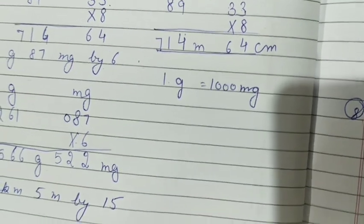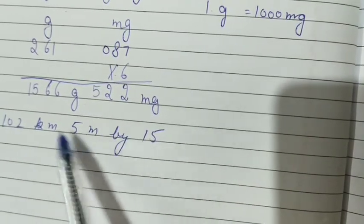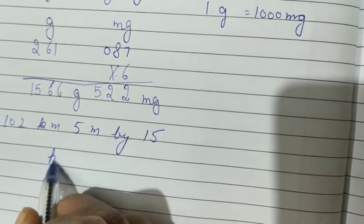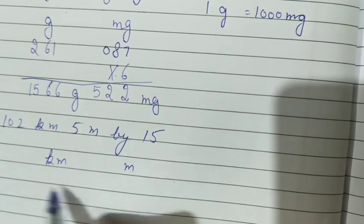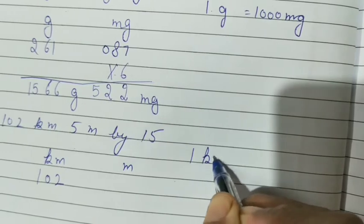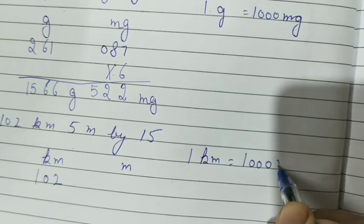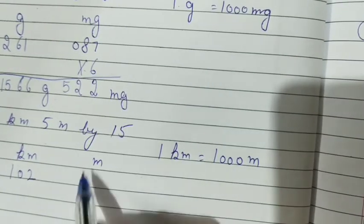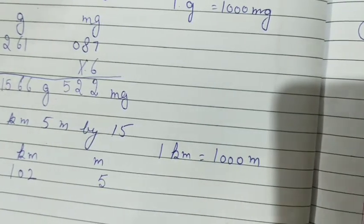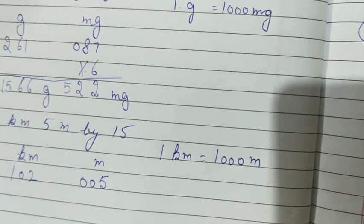Now question number 4, 102 kilometer 5 meter by 15. Now multiply by 15. First you will write kilometer, meter. You will frame the question, 102. Now you know in 1 kilometer, how many meters? In 1 kilometer there are 1000 meters. So in meter, how many digits are there? 3. But we have given only 5 meters. So how will you make 3 digits? 0, 0, 5.